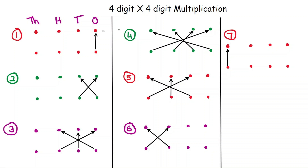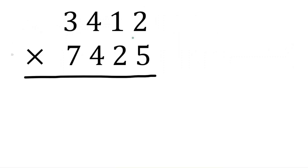Hello friends! In this video we will learn four-digit by four-digit multiplication. Using these seven steps we will do the multiplication. I have mentioned four dots representing ones place, tens place, hundreds place, and thousands place. Let's take an example and solve the problem.